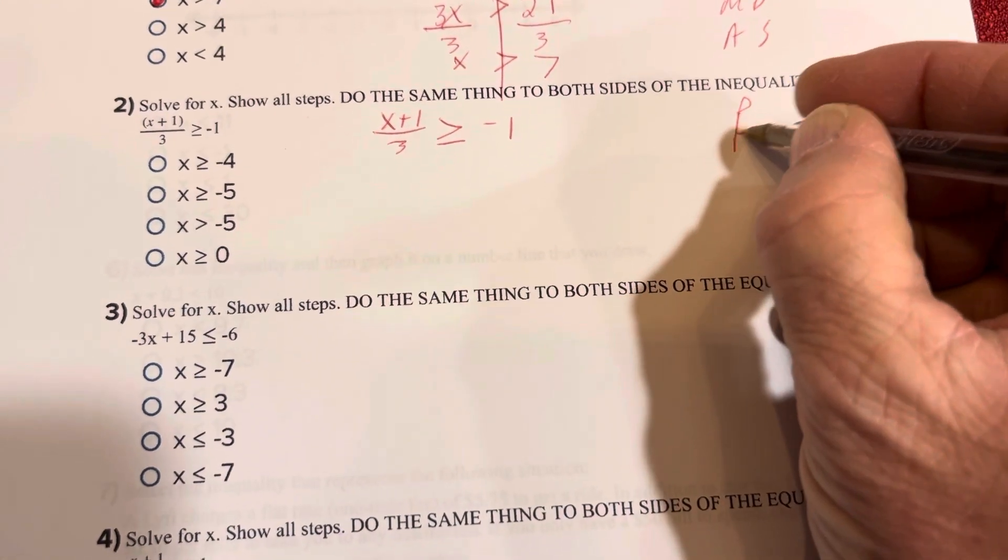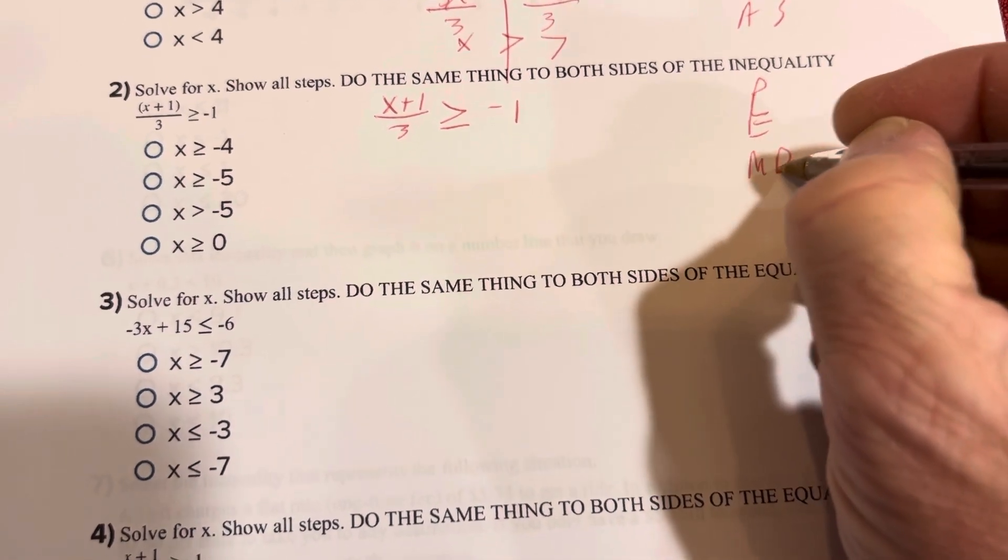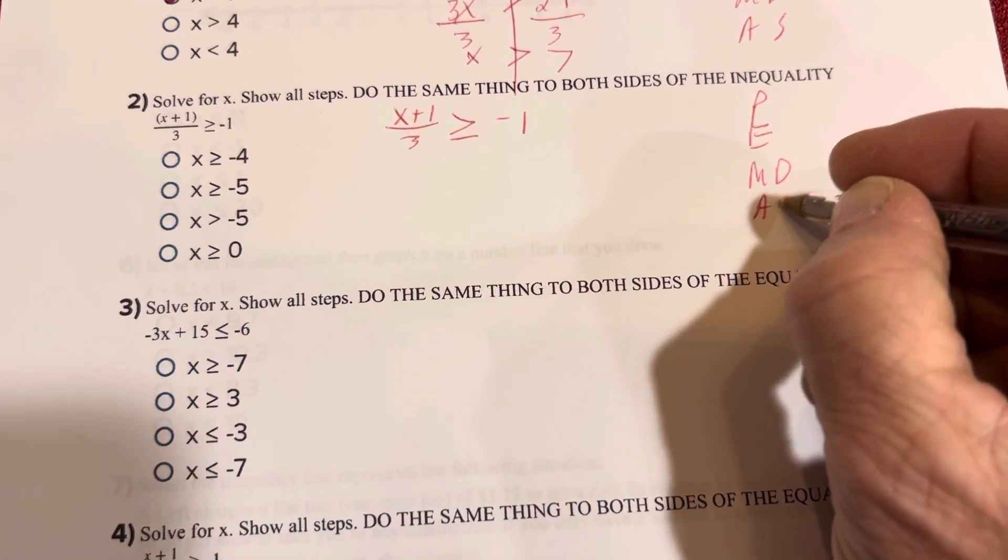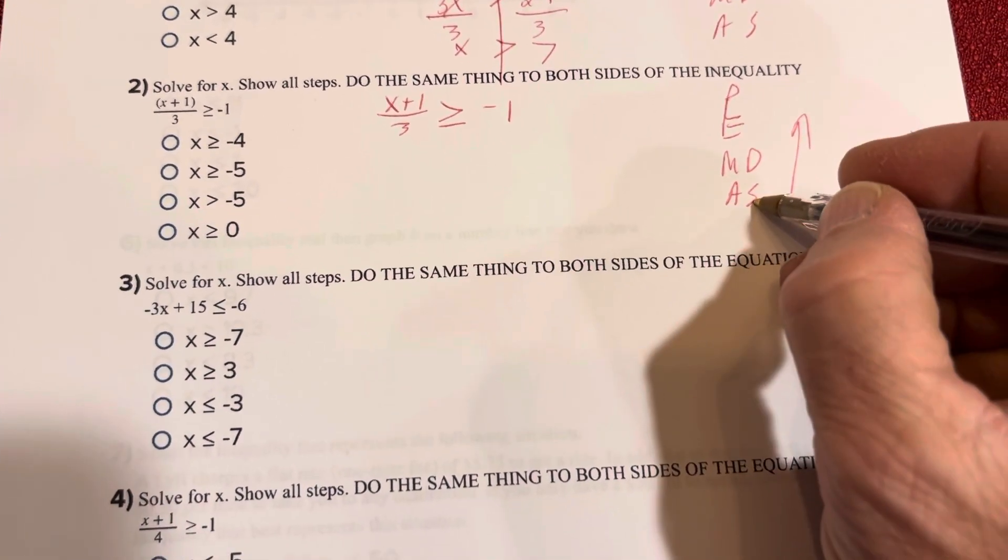Again, I undo PEMDAS in reverse. Parentheses, exponents, multiplication, division are the same level of importance, and add and subtract are too. So I undo those in reverse.